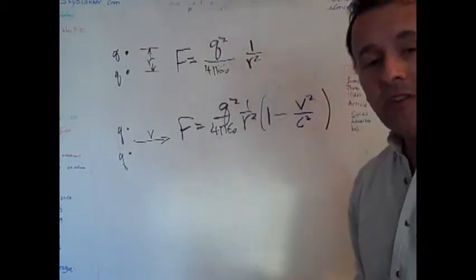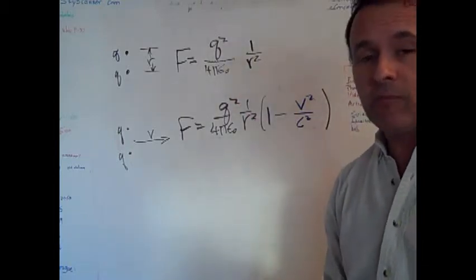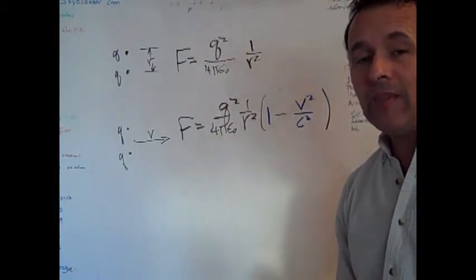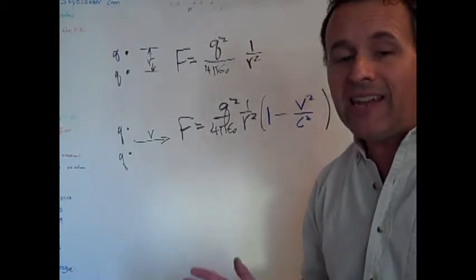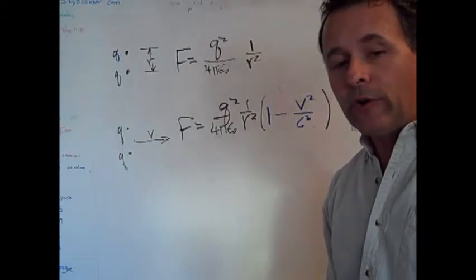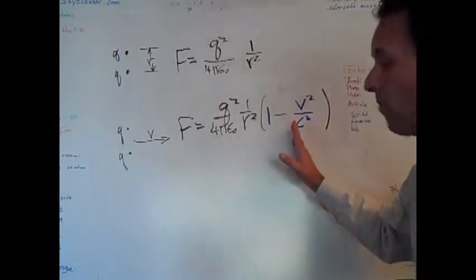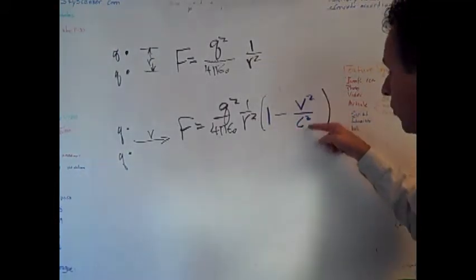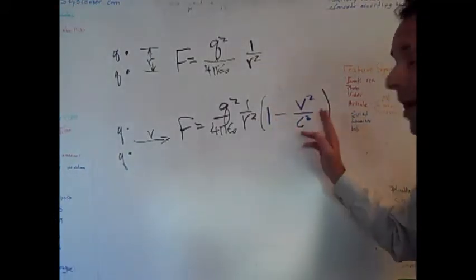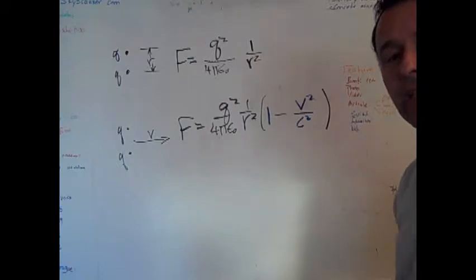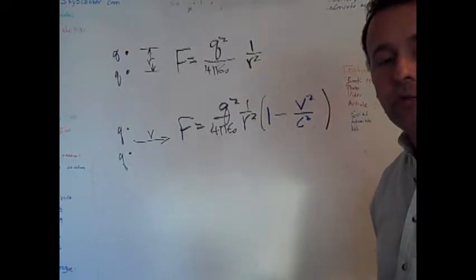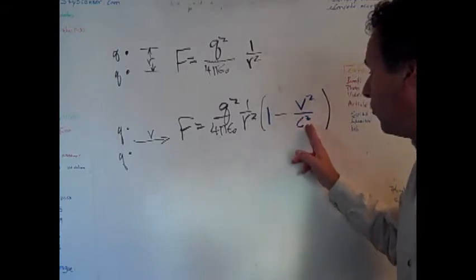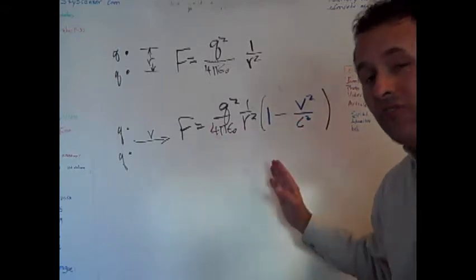So the main point is that the forces are not the same. Something is wrong. And in fact, the old pre-Einstein theory predicts something that doesn't make any sense. The old theory says that the force gets smaller as the speed gets larger. As V gets larger, this thing gets smaller. You got one minus some number. So the whole thing is multiplied by a number smaller than one. But as the speed of the two charges reaches the speed of light, the force goes to zero.